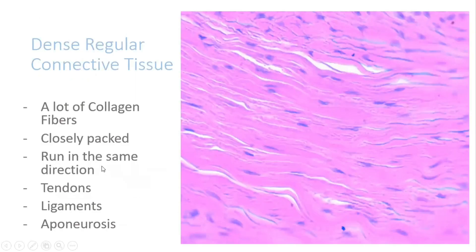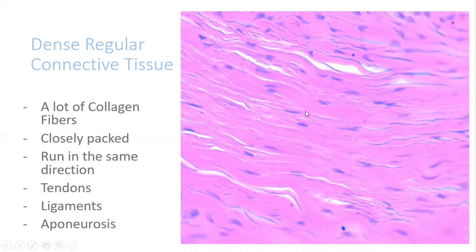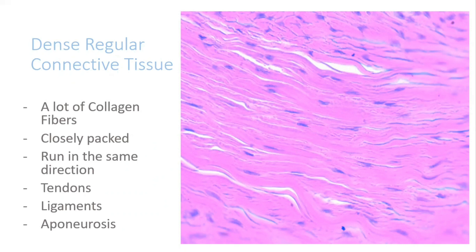Dense regular connective tissue also has a lot of tightly packed collagen fibers — that's why we call them dense. But now look: they all run in the same direction, very regular. So they are called dense regular connective tissue. Because they are very dense and strong, these tissues are located in tendons, ligaments, and aponeuroses.